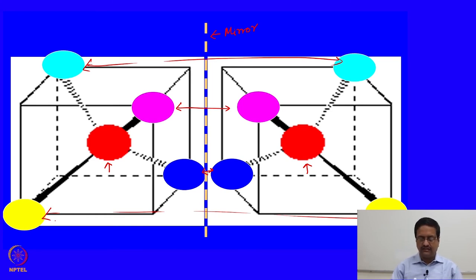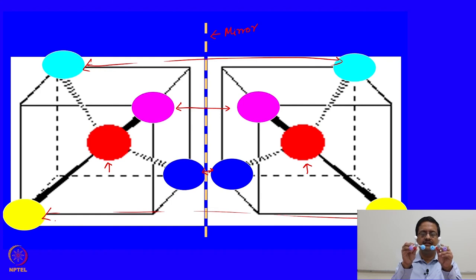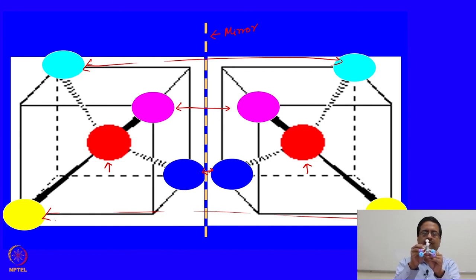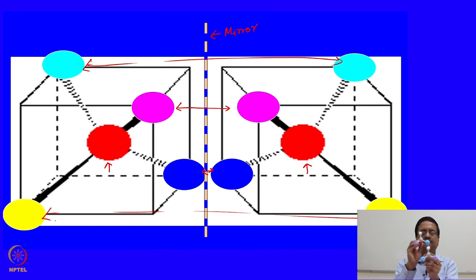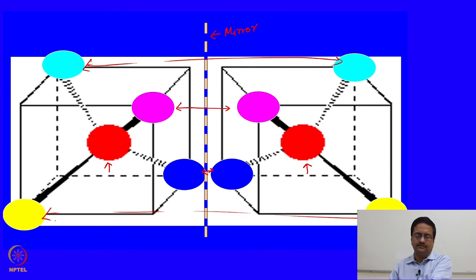The two molecules shown earlier are mirror images of one another — blue and blue, red and red, purple and purple, with hydrogen on top — but if we try to superimpose them they cannot be superimposed. Only two atoms (hydrogen and the red/oxygen atom) superimpose; the other two atoms do not. So these two are non-superimposable mirror images — rather, they are two different compounds.